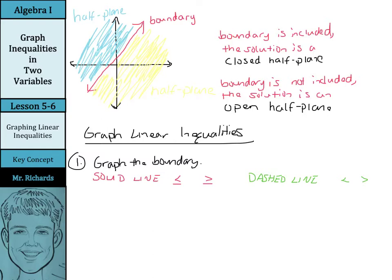Think back to just regular inequalities on a regular number line. Sometimes you had an open circle and you shaded, and that was just less than or greater than. And sometimes you had a closed circle and you shaded, and that was for your greater than or equal to or less than or equal to. It's the same concept here — when you have the or equal to, you'll have a solid boundary line, just like you had a solid dot. You'll have a dashed line when it's less than or greater than, just like you had an open circle for those number lines.